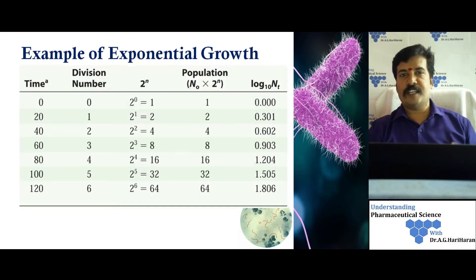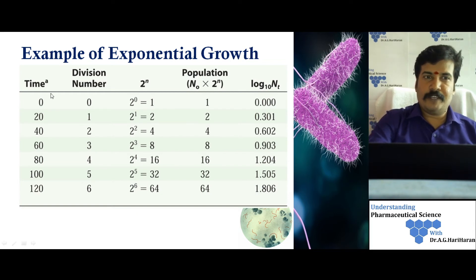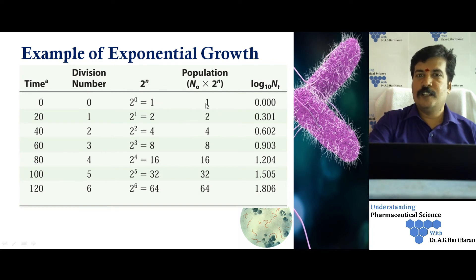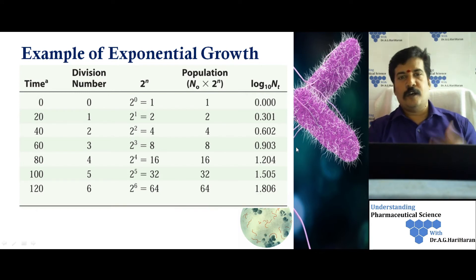Continuing the calculation for all six generations, we build a table with time points at 0, 20, 40, 60, 80, 100, and 120 minutes, corresponding to 0 through 6 cell divisions. The number of cells at each point is 2^n: 1, 2, 4, 8, 16, 32, and 64 cells. We also take the logarithm of cell counts, which will be explained in the next step.